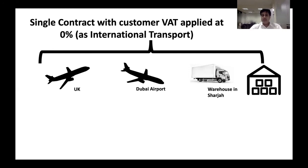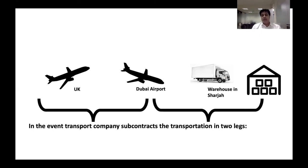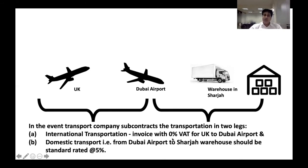This coin has two sides. If instead I book two separate contracts — one with an airline to pick up goods from the UK and deliver to Dubai airport, and a second contract with a local transport company to pick up from Dubai airport and deliver to my Sharjah warehouse — then we have two legs. The international transport invoice is zero rated for UK to Dubai airport, but the domestic transport from Dubai airport to the Sharjah warehouse is charged at 5% standard rated.